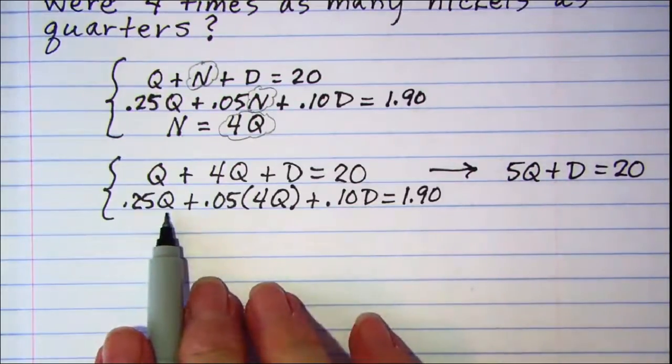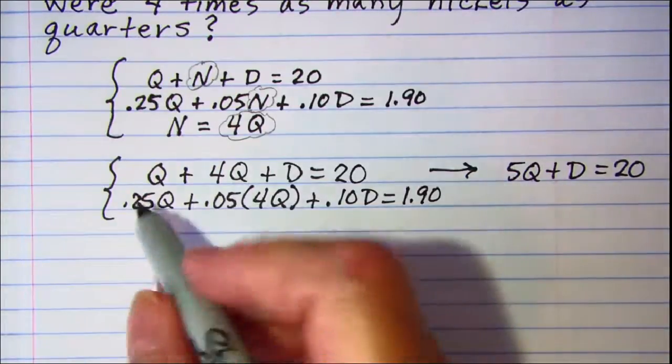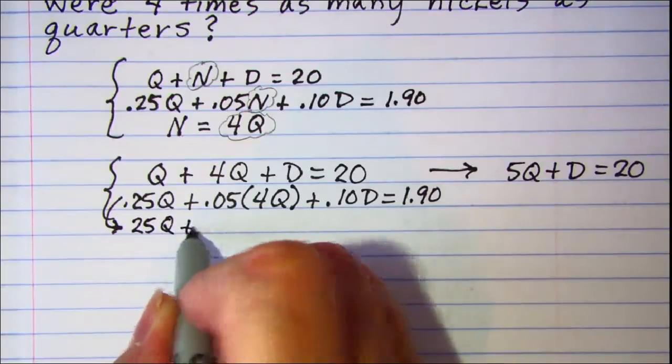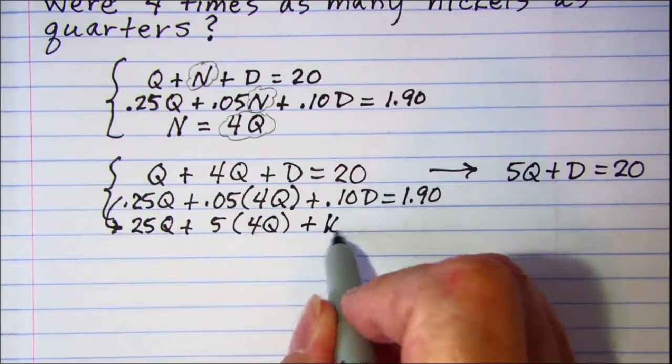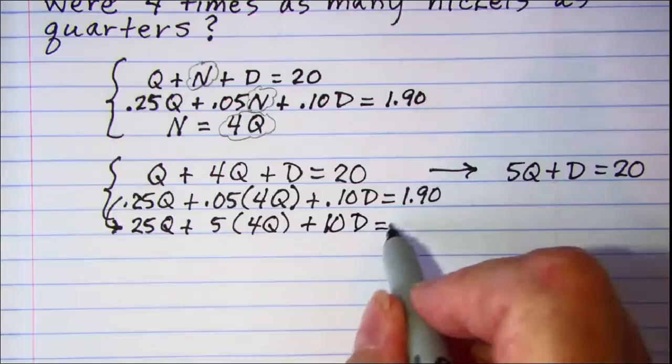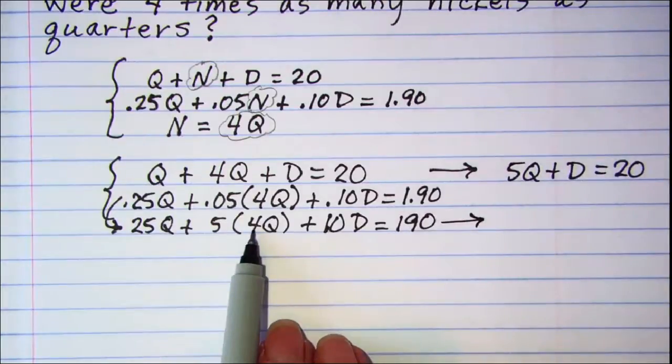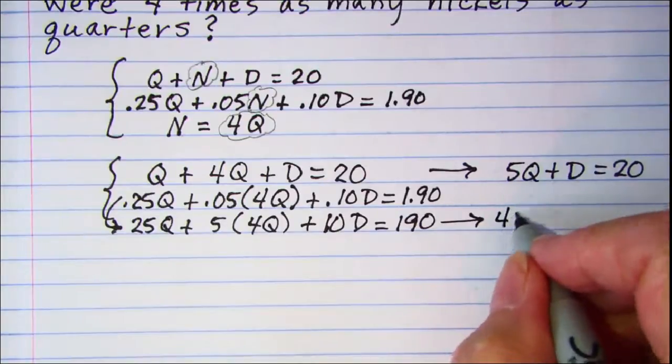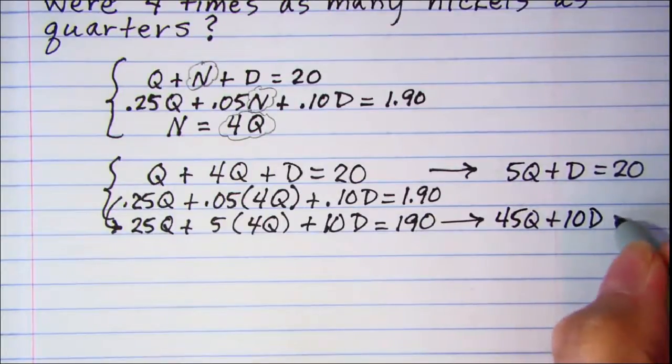And then this one I'm going to multiply by 100 to get rid of these decimals before I rewrite the equation. So this is 25Q plus 5 times 4Q plus 10D equals 190. Now let's combine terms here, 5 times 4 is 20, so I have 20Q here and 25Q here, that adds together to give me 45Q and then plus 10D equals 190.